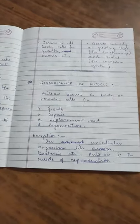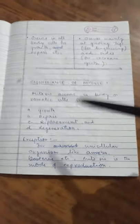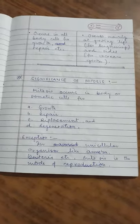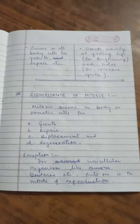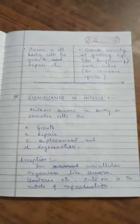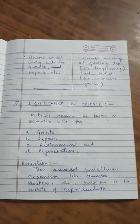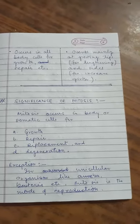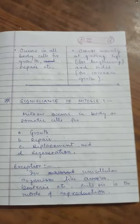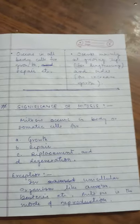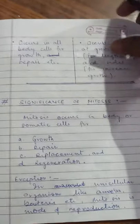In some unicellular organisms like bacteria and amoeba, mitosis is the mode of reproduction. In these organisms, an organism simply divides equally into two halves. So we can say that mitosis is also a mode of reproduction, but only in certain unicellular organisms.